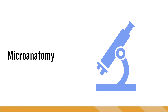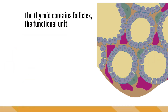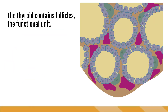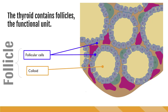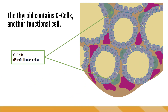To better understand how the thyroid works, we're going to first take a look at the microanatomy of the thyroid. The thyroid contains follicles, which are the functional unit. The follicular cells, shown here in a grayish blue, surround an area that is filled with colloid. The colloidal area plus the circle of follicular cells makes up the follicle, which is responsible for making hormones. The thyroid also contains C cells, shown here in green, also known as para-follicular cells because they sit next to the follicles. These cells are also a functional cell of the thyroid as they too produce a hormone. Note that there are capillaries that run near the follicles and C cells, which allow the release of hormones directly into the bloodstream.